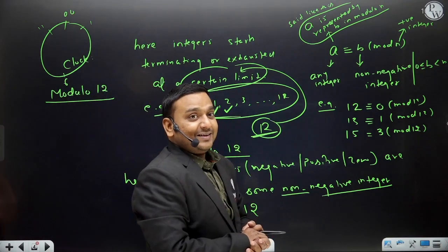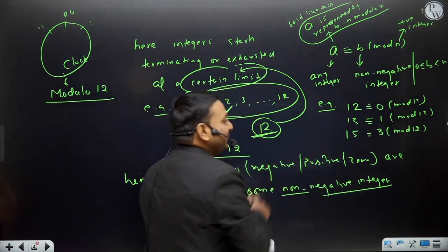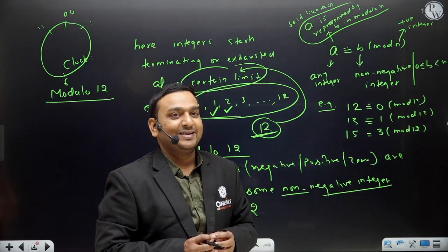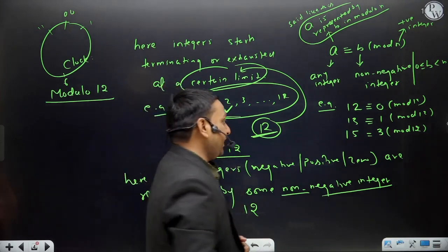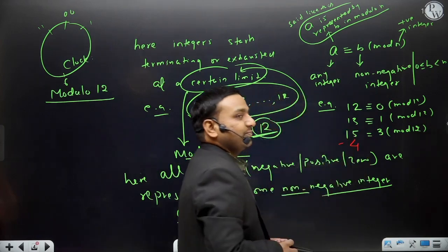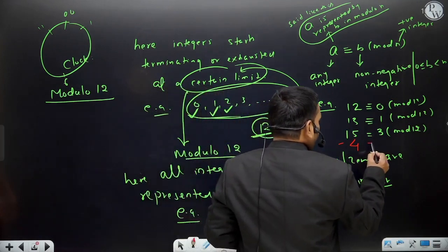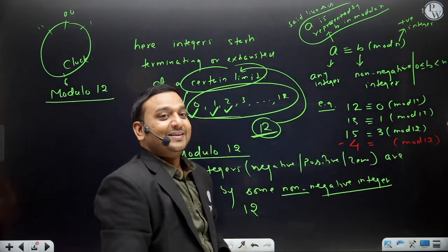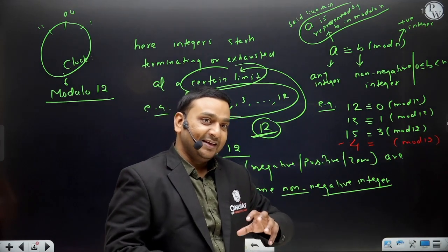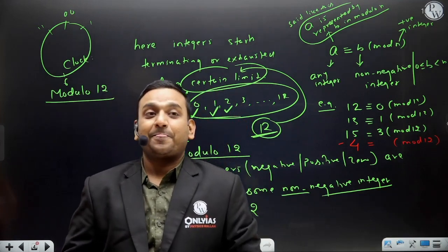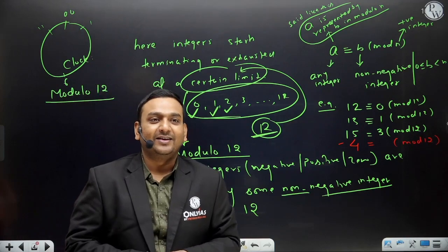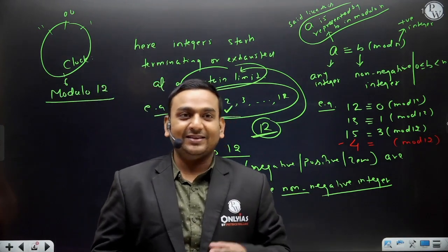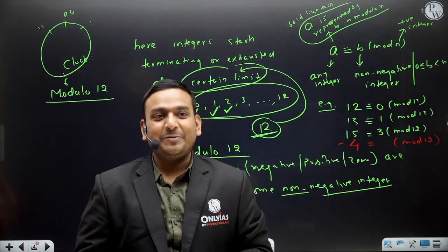You have already memorized this much - that sir, divide 15 by 12 and whatever remainder is left, that will be its representation in modulo. But when I ask: my friend, what does minus 4 become in modulo 12? Now for this - these are the days when definitions are studied, these are the days these concept talks are running. You'd say 'sir, I haven't used negative numbers yet' - then you have studied wrong. In algebra, negative integers are also used.